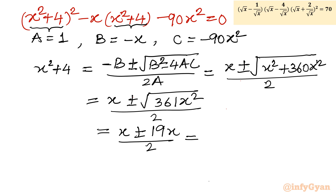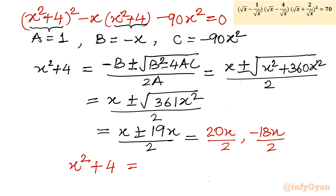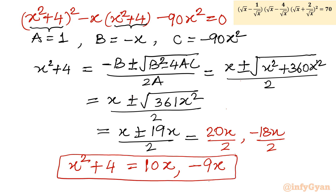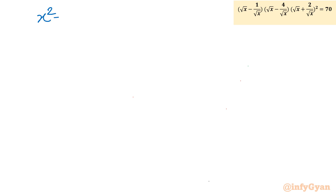From the two signs: taking the plus sign gives (x + 19x) / 2 = 20x / 2 = 10x; taking the minus sign gives (x − 19x) / 2 = −18x / 2 = −9x. So x² + 4 = 10x or x² + 4 = −9x, giving us two quadratic equations to solve.